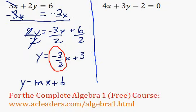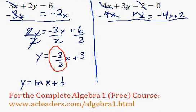What about over here? Now I want to isolate y, so I'm going to take the 4x and the negative 2 over to the right side of the equation by subtracting 4x and adding 2 to both sides. These cancel out, those cancel out, so we have 3y equals negative 4x plus 2.